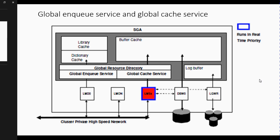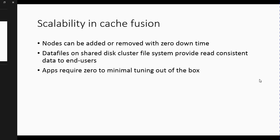In terms of scalability and Cache Fusion, what Cache Fusion allows for is that you can just add nodes or remove nodes with no downtime. That's why scalability comes in — you have a continuous number of instances that can be added to your environment. You can continue to expand to whichever number of instances you have, and all those instances are actually connected through a shared cluster file system.